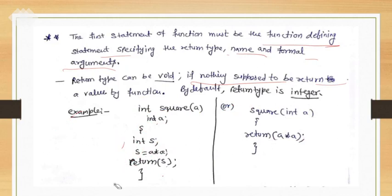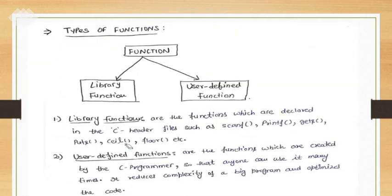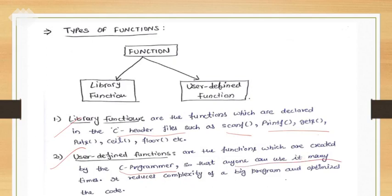That is a user-defined function example. Next, types of functions — there are two types we have already discussed. Library functions belong to the C library: scanf, printf — their functionalities are already defined in the C library, which we use by including C header files. Next, user-defined functions — the programmer creates those functions and their functionality, and can use them throughout the program.